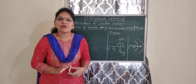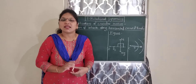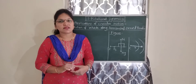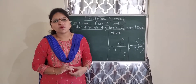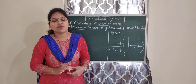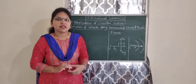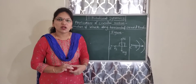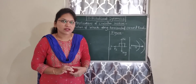Non-uniform circular motion: if a particle revolves along the circumference of a circle with variable speed, then the motion is called non-uniform circular motion.